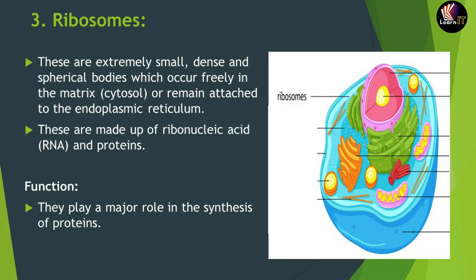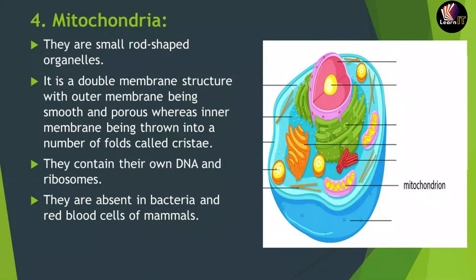The fourth and well-known organelle is the mitochondria. It is a small rod-shaped organelle with a double membrane structure. The outer membrane is smooth and porous, while the inner membrane forms different kinds of folds known as cristae. Mitochondria also contain their own DNA and ribosomes, which is a special characteristic. They are absent in bacteria and RBCs (red blood corpuscles) of mammals.